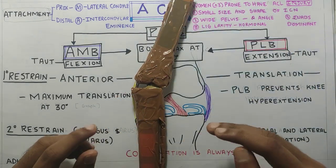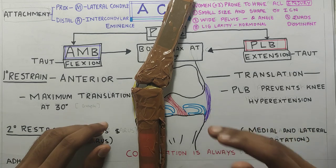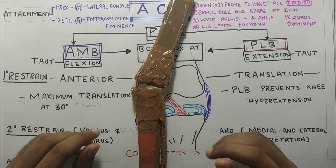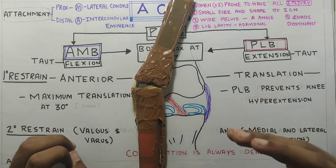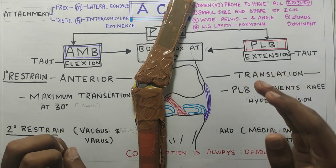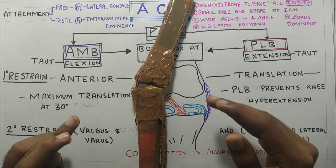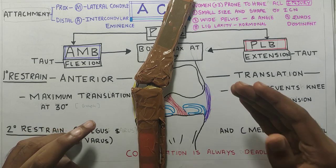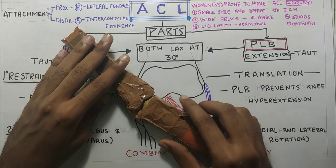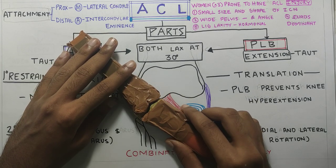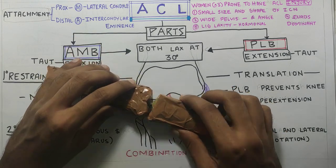The Q angle is the angle formed by the line passing through the tibia and patella vertically, and the line passing through the patella joining the ASIS. The angle formed between them is the Q angle, and in women it is very large. Other reasons for ACL injury include ligament laxity due to hormonal imbalance, and also quadriceps dominance in females — quadriceps causes anterior translation of the tibia, which stresses the ACL.